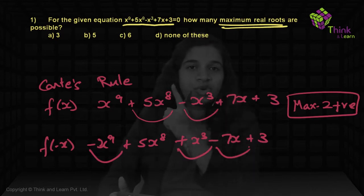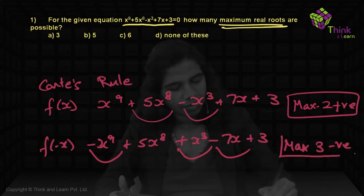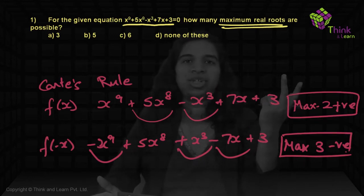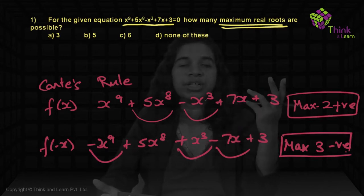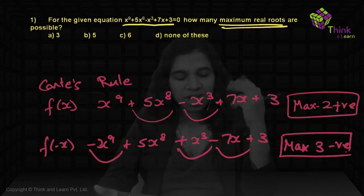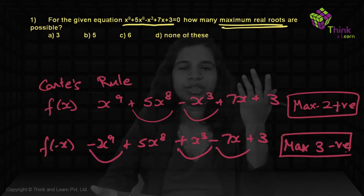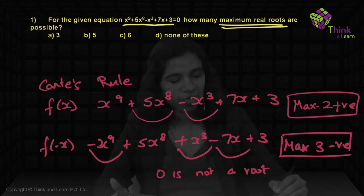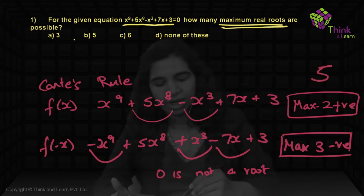Now if you count the sign changes in f(−x), you have one, two, and three — three sign changes. That means a maximum of three negative roots. Real roots can be positive, negative, or zero. Is zero a root? No — check the constant. If there is no constant, only then would zero be a root. Here we have the constant 3, which means zero cannot be a root.